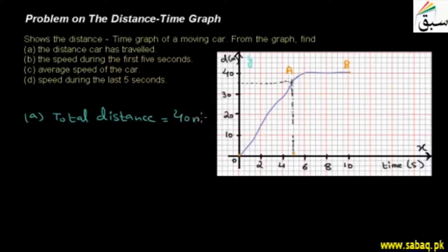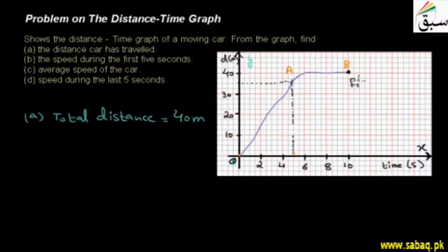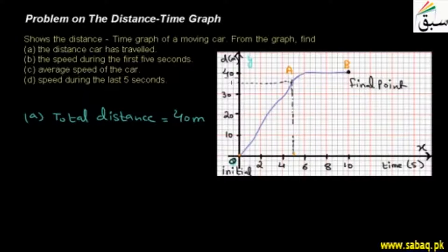It is 40 meters because you can see that the car's initial point is O — it has started its journey from O. Its end point is called B. So from O to B is the initial and final point. From the initial and final point it has travelled a total distance of 40 meters. So we have answered this question: the total distance travelled is 40 meters.